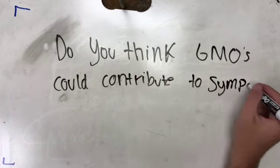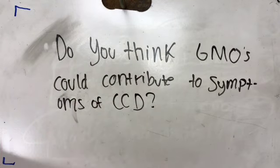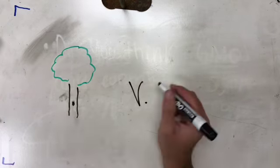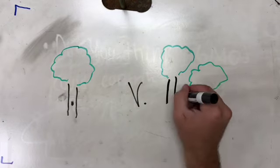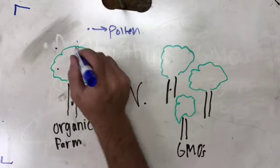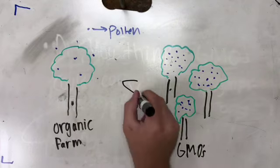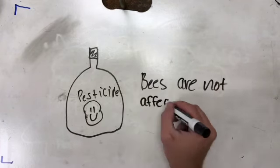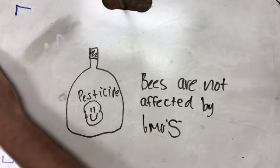GMOs are engineered in a way in which they create their own pesticides as well as self-fertilizers. The pesticides used in GMOs have been tested on adult honeybees and bee larvae, and showed no sign of harm for these bees.